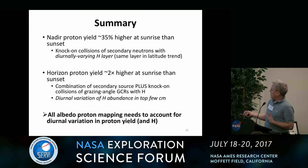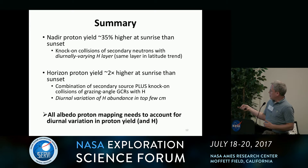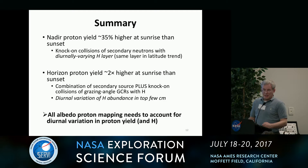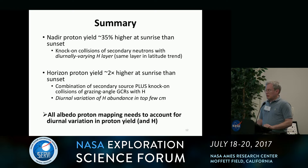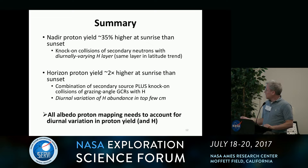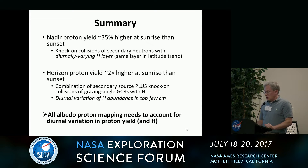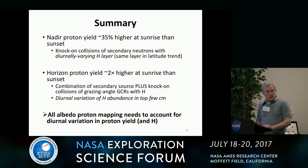In summary: this 35% contrast between morning and evening in the nadir-viewing mode is the highest contrast we've seen in any data analysis on mapping yields. Looking at the horizon, the yield is actually twice as high in the morning as in the evening. Perhaps most importantly, this means that any mapping we do from now on must first account for this diurnal variation in proton yield, which is presumably related to variation in hydrogen content.